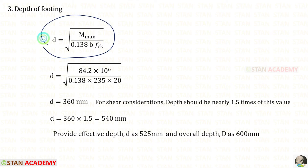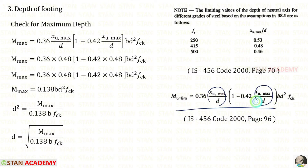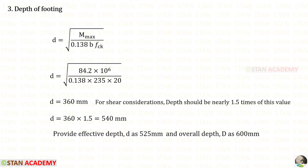Using the formula for effective depth D, we refer to the code book pages 70 and 96. For xu max upon D we apply 0.48 to derive the formula. Substituting B as 235 mm, FCK as 20, and the bending moment, we get D as 360 millimeter.